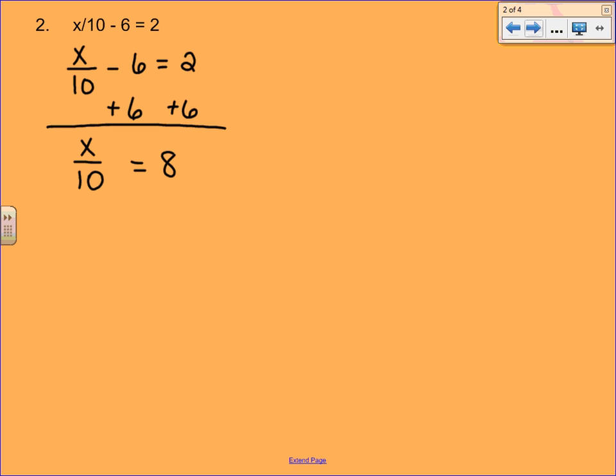Now, this equation is a division equation. Remember, the fraction bar just means division. So our next step is going to be to multiply both sides of the equation by 10. You can either use parentheses or you can use the multiplication dot, whichever you prefer. So the 10s cancel on the left-hand side. We're left with x. On the right-hand side, we have 80.